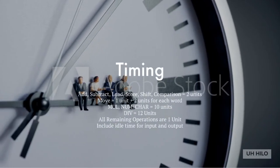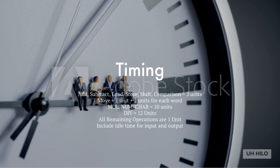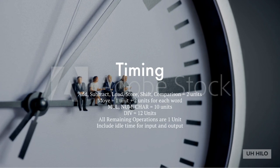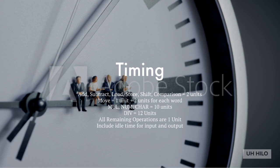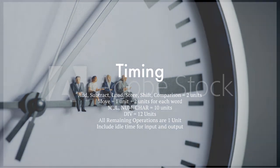For analysis, timing is important. Add, subtract, load, store, shift, and comparison commands take 2 units of time. MOVE requires 1 unit of time plus 2 for each word moved. MUL, NUM, and CHAR each require 10 units of time, and DIV requires 12 units of time. All remaining operations take 1 unit of time, plus idle time for input and output if applicable.